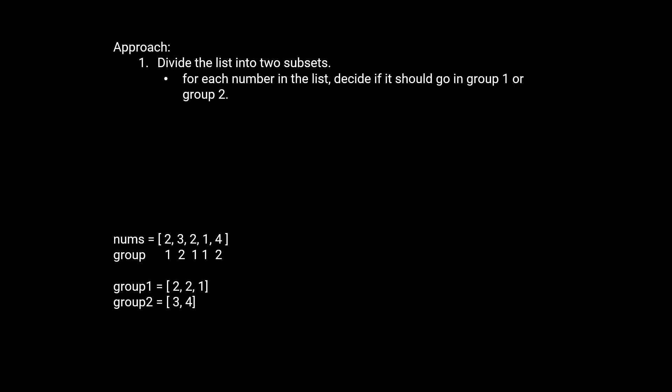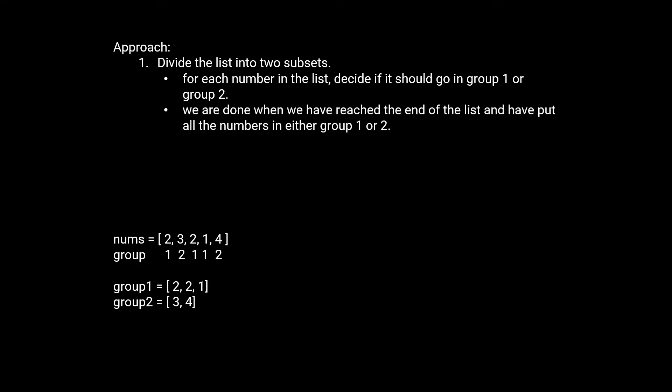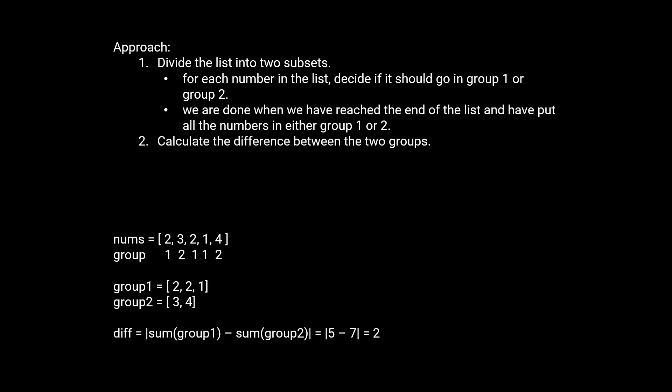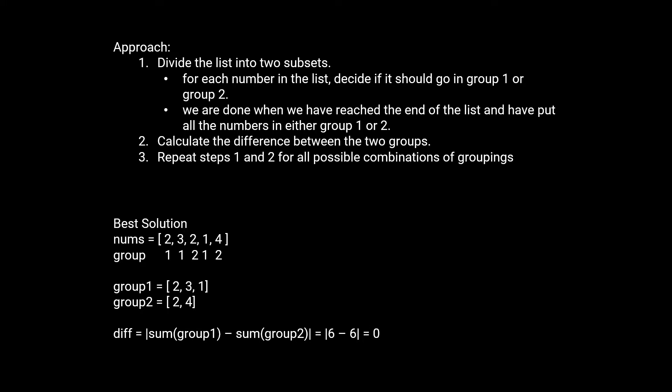A good first step for all these problems is to replicate how you would solve this problem as a human and then try to translate it to code. If I were manually solving this problem, my first step would be to divide the list of numbers into two subsets. For each number I can decide if I want it to go into my first group or my second group. We know we're finished assigning numbers when we've run out of numbers to place. Our next step is to calculate the difference between the sets. However, looking at one combination doesn't tell us if it's the best, so we need to repeat these steps for all possible combinations and return the smallest difference.